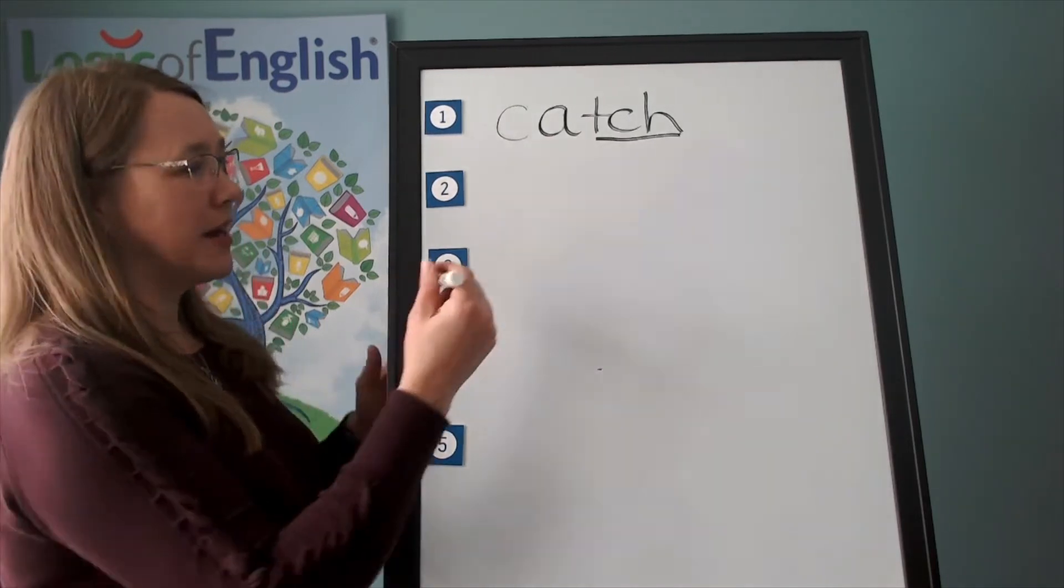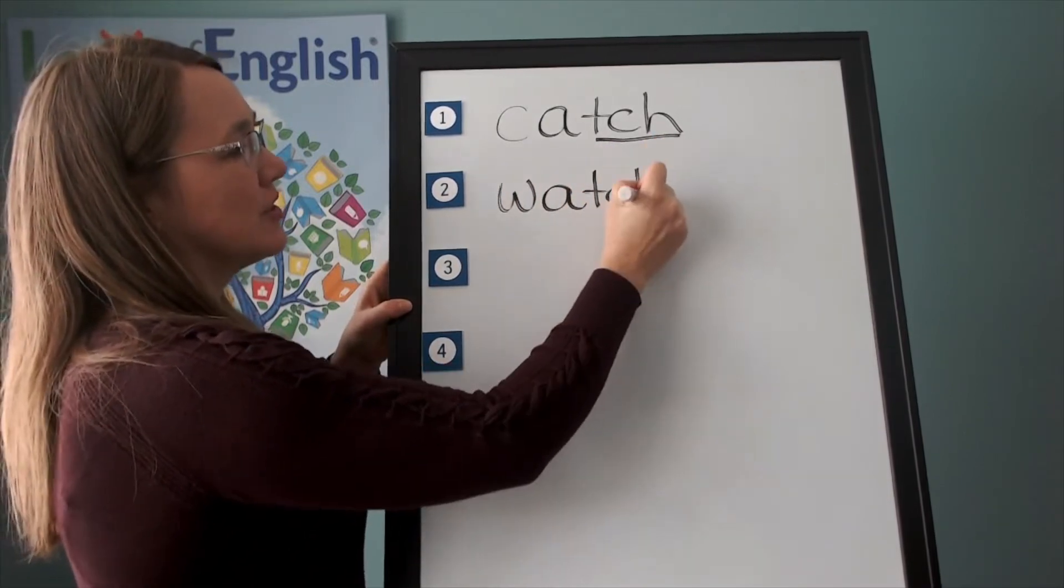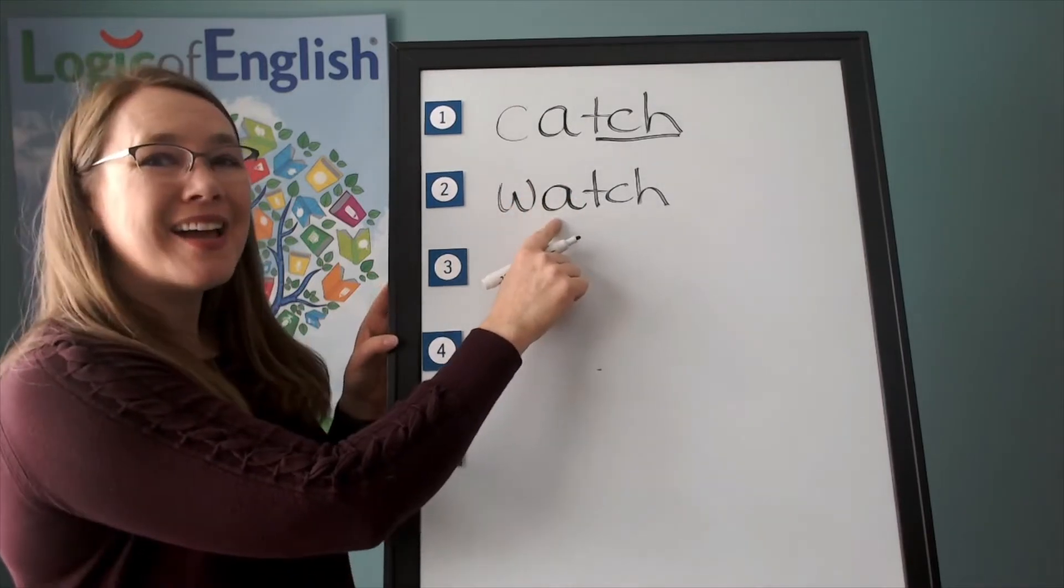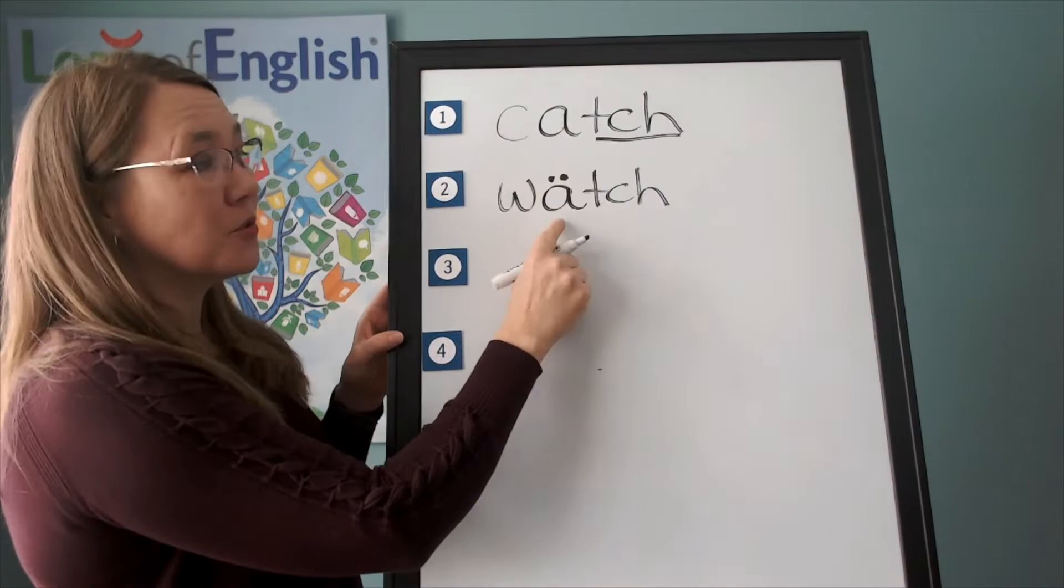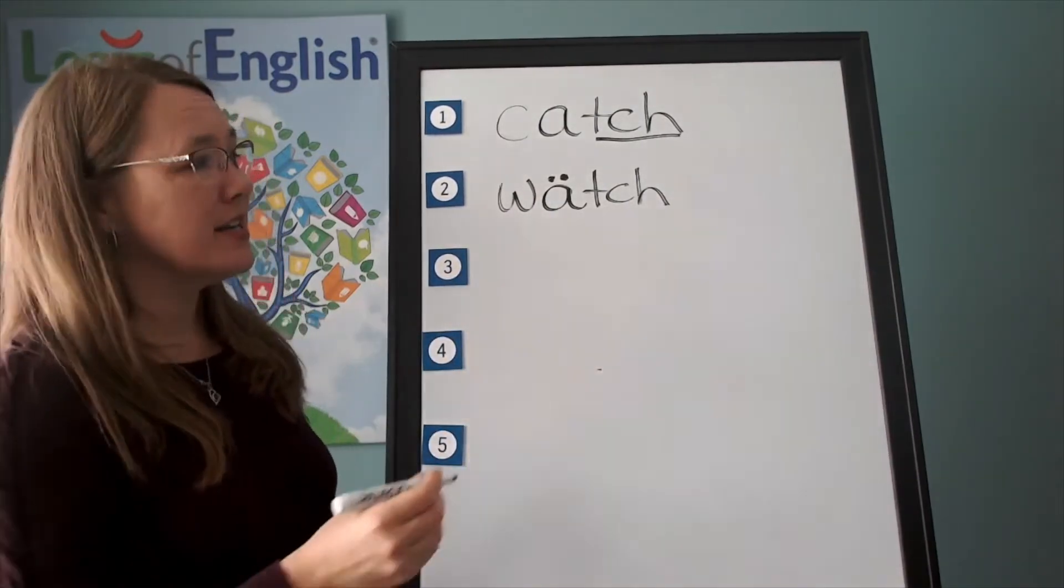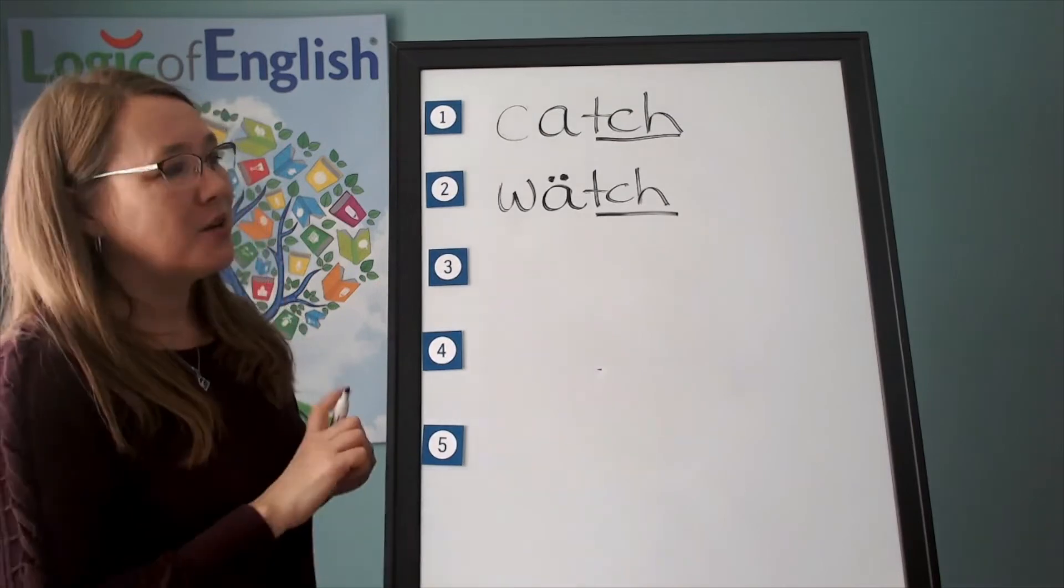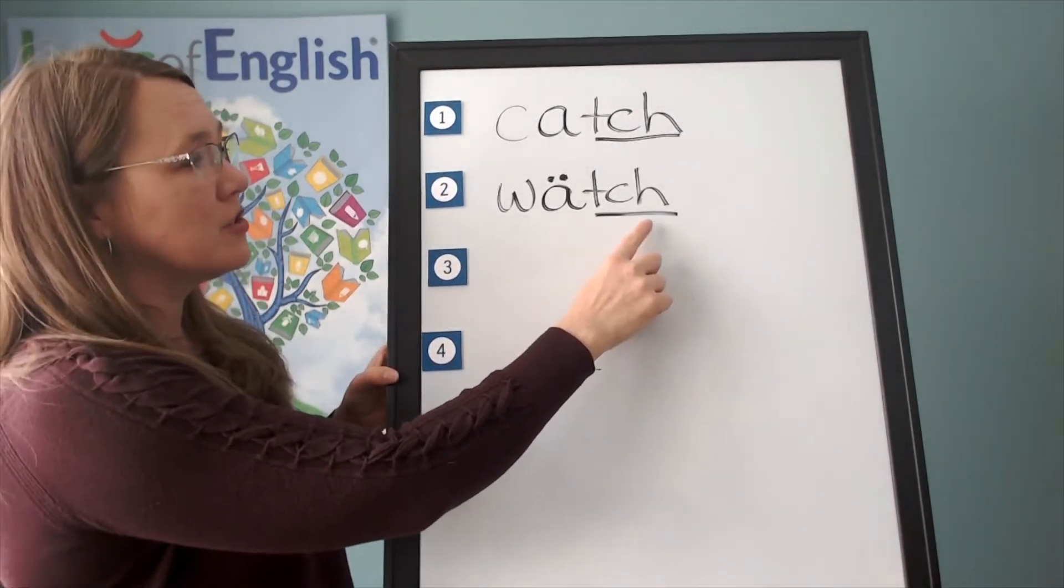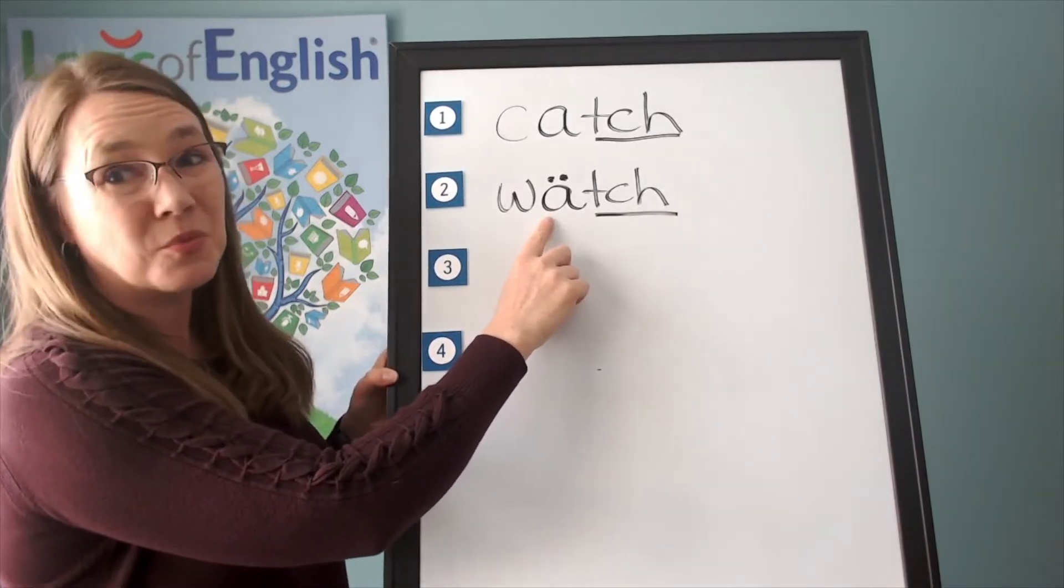Now help me to write watch. W, a, ch. How will we mark watch? What sound of a is that? It's the broad sound. You're right. So we'll put the ch. Now let's look at this again. Watch uses three-letter ch after a single vowel, which is saying its broad sound.